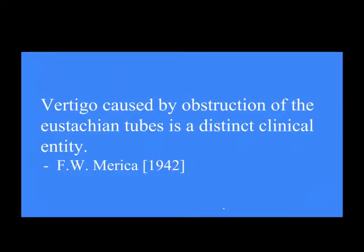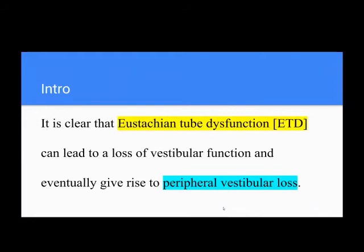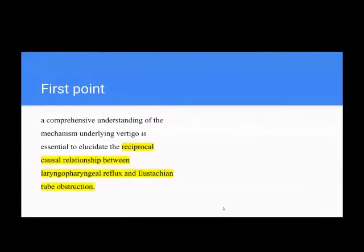Fundamentally, it is clear that eustachian tube dysfunction can lead to a loss of vestibular function and eventually give rise to peripheral vestibular loss. A comprehensive understanding of the mechanism underlying vertigo is essential to elucidate the reciprocal causal relationship between laryngopharyngeal reflex and eustachian tube obstruction.